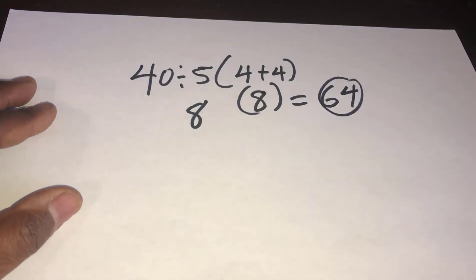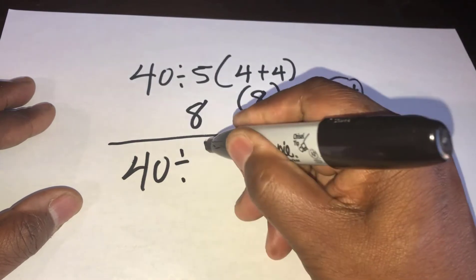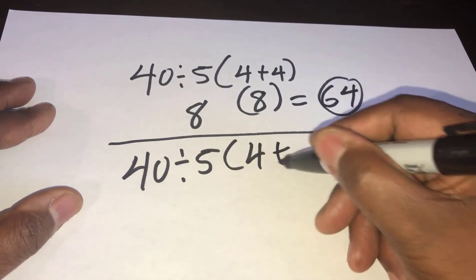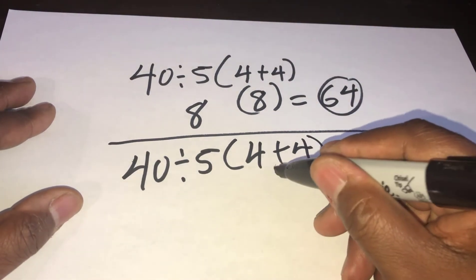All right, and another way some people do it - they go 40 divided by 5 times 4 plus 4. Okay, do it in parentheses first - 4 plus 4 is 8.